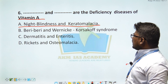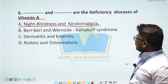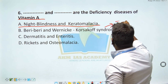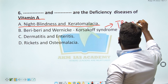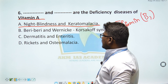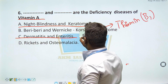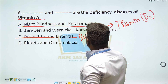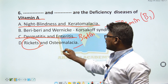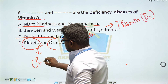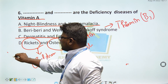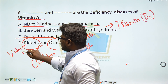Next: Beriberi and Wernicke-Korsakoff syndrome are the deficiency diseases of vitamin B1. Rashes and enteritis are associated with biotin deficiency — vitamin B7 is biotin. Rickets in children and osteomalacia in adults are deficiency diseases of vitamin D.